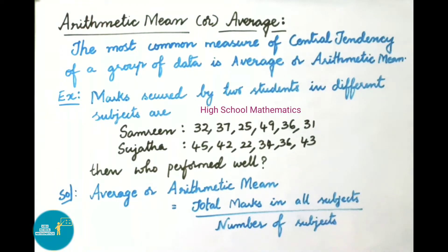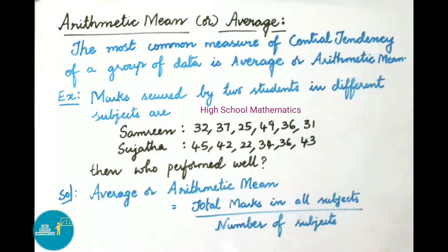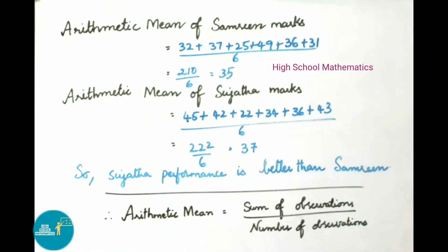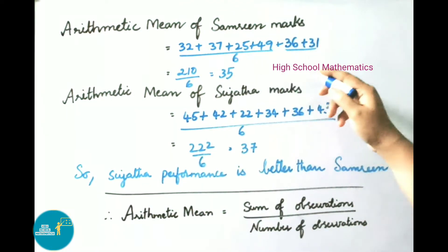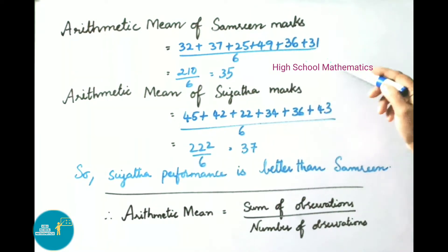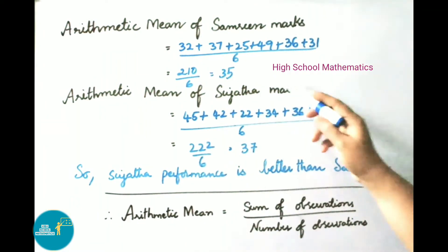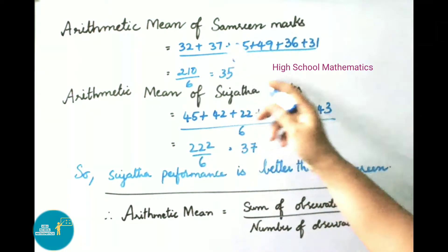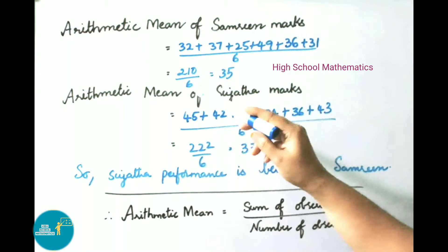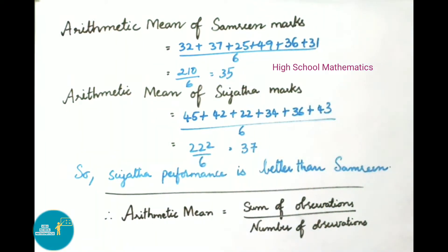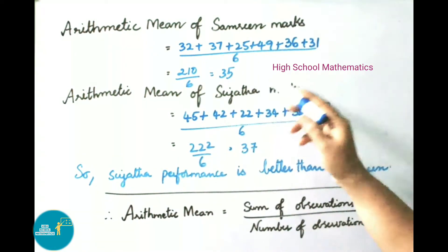The arithmetic mean equals total marks in all subjects divided by number of subjects. Arithmetic mean of Sumbreen's marks equals 32 + 37 + 25 + 49 + 36 + 31 divided by 6 subjects. The sum of all six subject marks is 210, divided by 6, which equals 35.